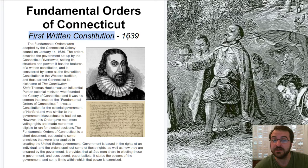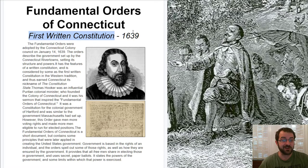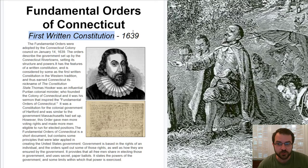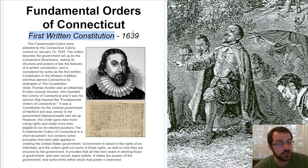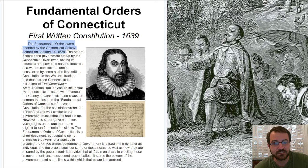So what is it? It is a Constitution — a list of rules by which a government must follow. It is the rule book for government. What guides the government? Do they have a rule book or something? Yes, it's called the Constitution. And this one was created in 1639. The Fundamental Orders were adopted by the Connecticut Colony Council on January 14, 1639.